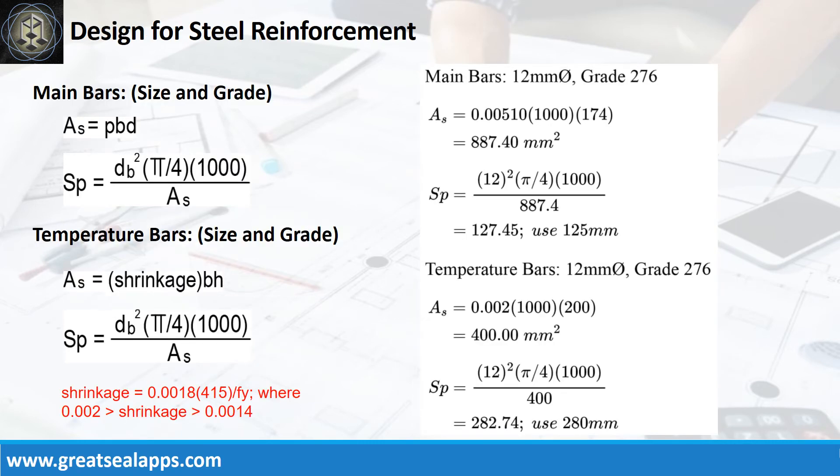Given rho equals 0.0051, B equals 1000 mm and D equals 174 millimeters, the area of steel for main bars is 887.4 square millimeters and the spacing for 12 mm bar is 125 mm. The area of steel for temperature bars is 400 square millimeters and the spacing for 12 mm bar is 280 millimeters.